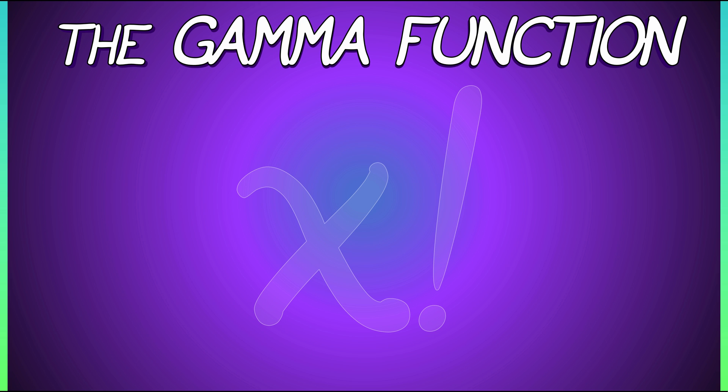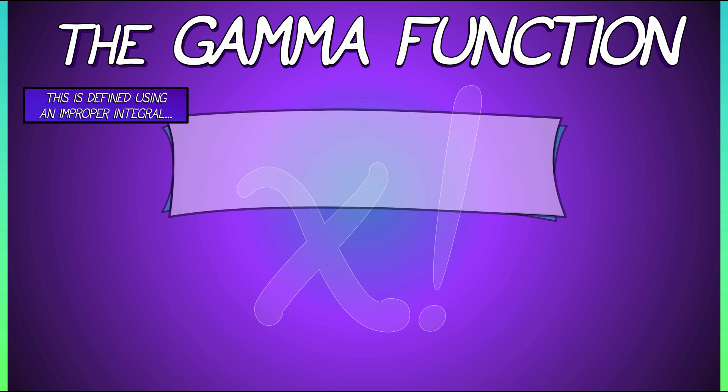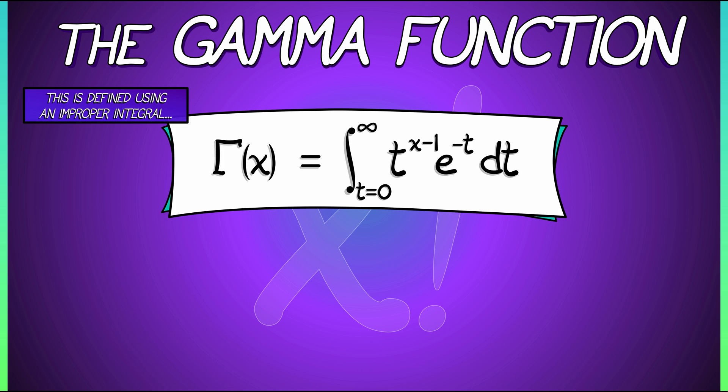The gamma function, which we alluded to way back in Chapter 1, is a function that is defined in terms of an improper integral. Gamma of x is the integral as t goes from 0 to infinity of t to the x minus 1 times e to the negative t dt.